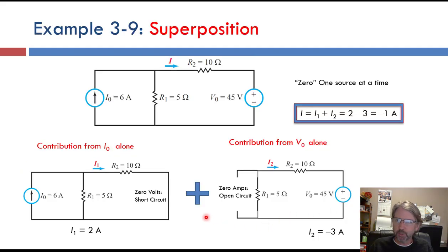Here's an example of using superposition to solve for this circuit here. This circuit has two sources, a current source and a voltage source. And so the trick with superposition is we do one source at a time. So we analyze this circuit twice because there are two sources.